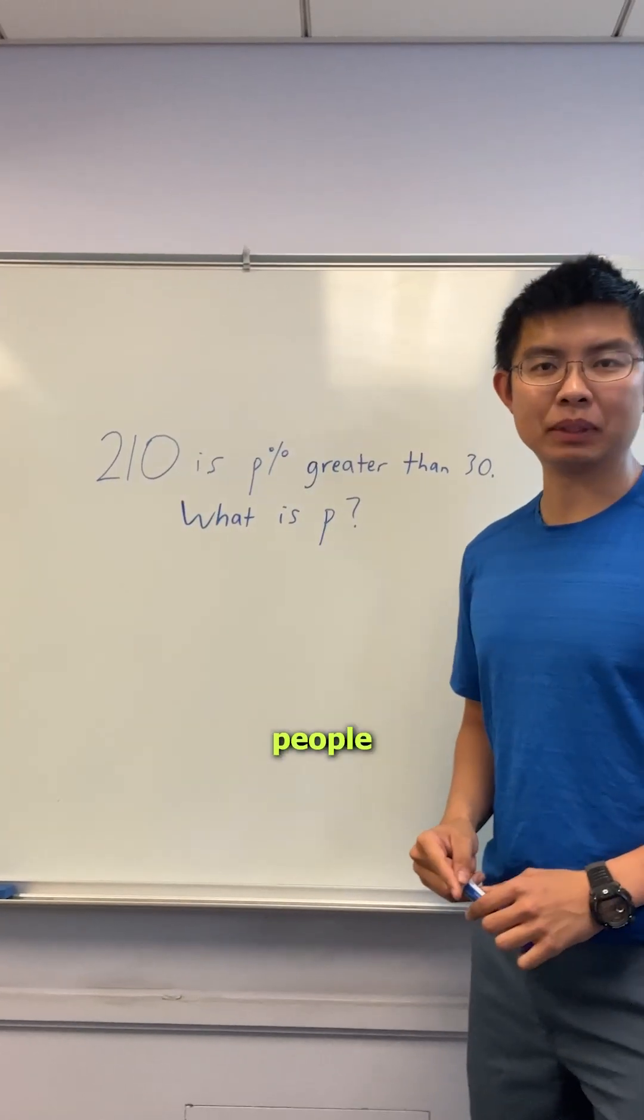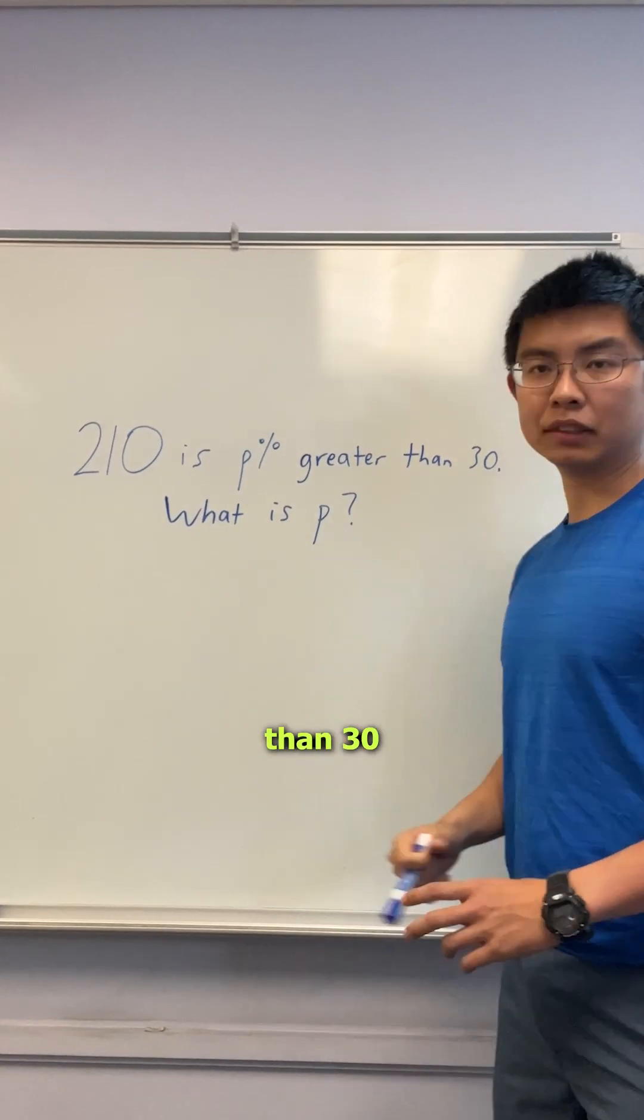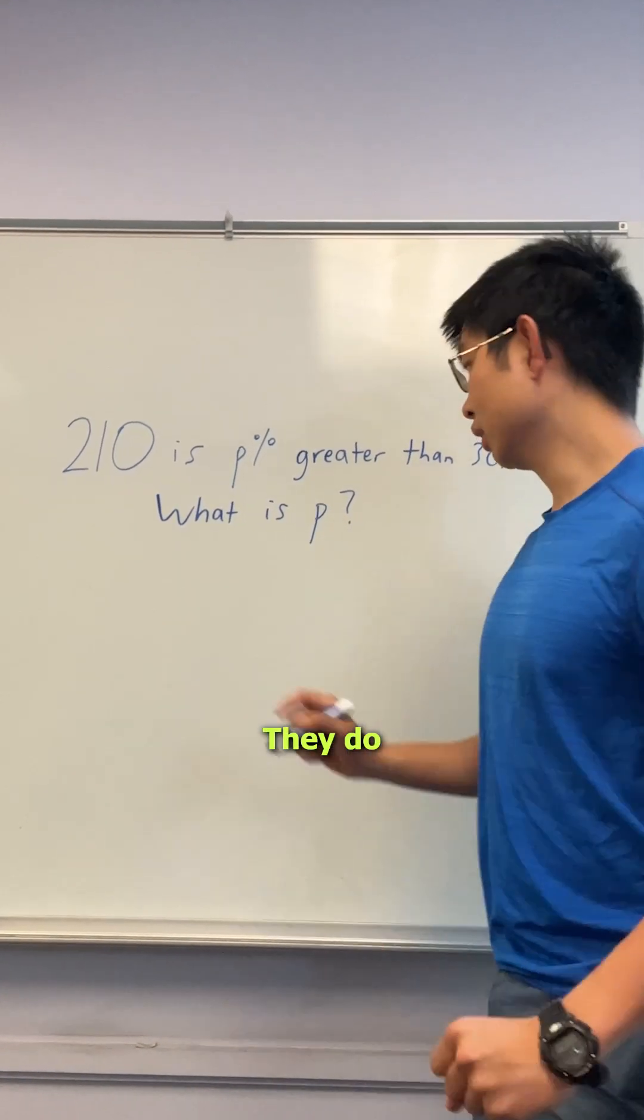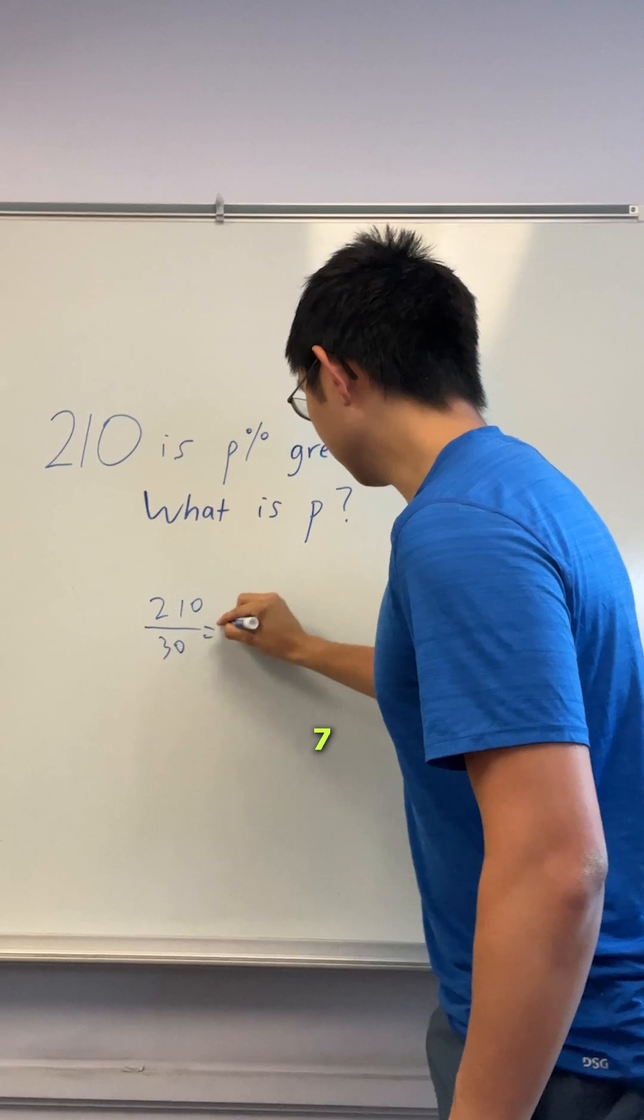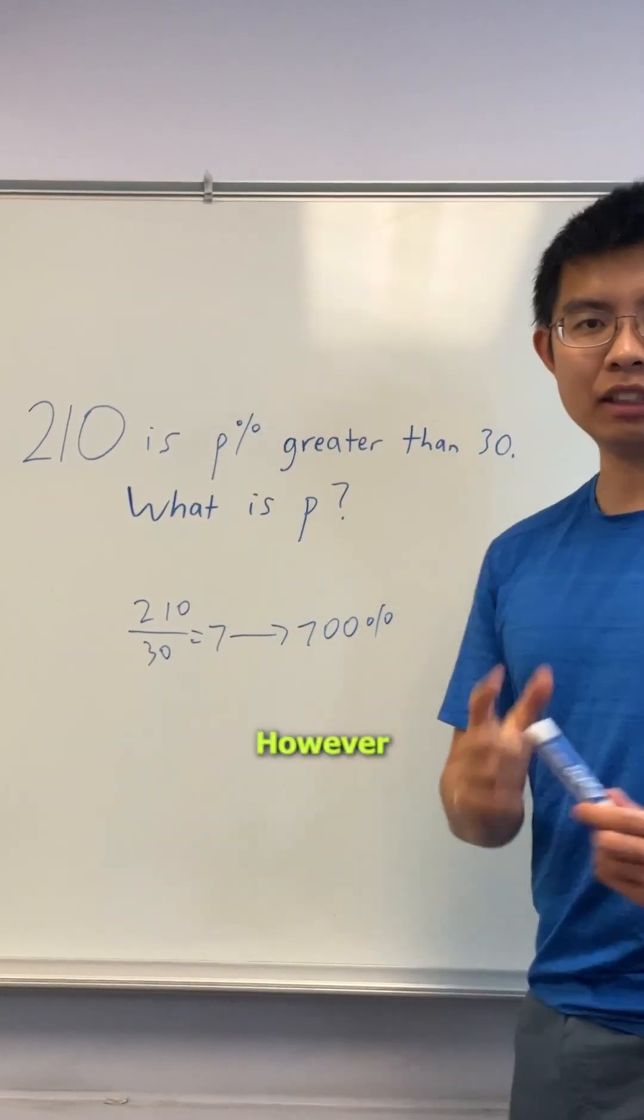Here's a trap that most people fall into. They see 210 is P percent greater than 30. Automatically, they do 210 divided by 30 equals 7, and they conclude that P equals 700%.